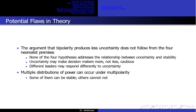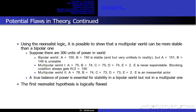The argument that bipolarity produces less uncertainty does not follow from the four neorealist premises. None of the four hypotheses address the relationship between uncertainty and stability. Uncertainty may make decision-makers more, not less, cautious. Different leaders may respond differently to uncertainty. Multiple distributions of power can occur under multipolarity — some of them can be stable, others cannot. Using neorealist logic, it is possible to show that a multipolar world can be more stable than a bipolar one.